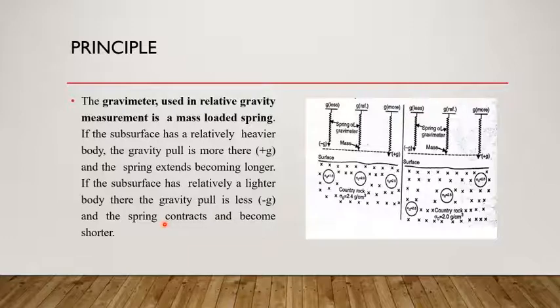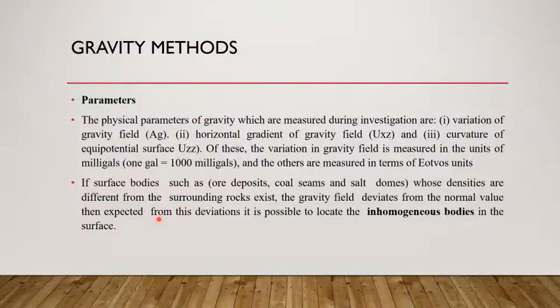Likewise, we measure or determine the subsurface material density. Then the parameters measured in the gravity method. The physical parameters of gravity which are measured during investigation are variation of the gravity field, horizontal gradient of the gravity field, and curvature of the equipotential surface. Of this variation, generally the gravity field is measured in terms of milligals and others are measured in terms of Eotvos units.